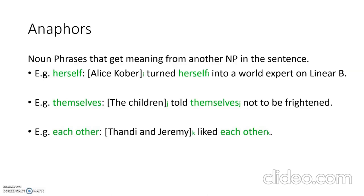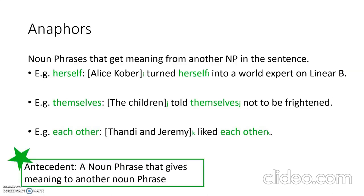In the example, Alice Kober turned herself into a world expert on Linear B. Herself refers to Alice Kober, and the NP Alice Kober is giving meaning to herself — they are co-indexed and refer to the same entity, so herself is the anaphor. A quick note: an antecedent is a noun phrase that gives meaning to another noun phrase. In this case, Alice Kober is the antecedent because it's giving meaning to herself, the anaphor.